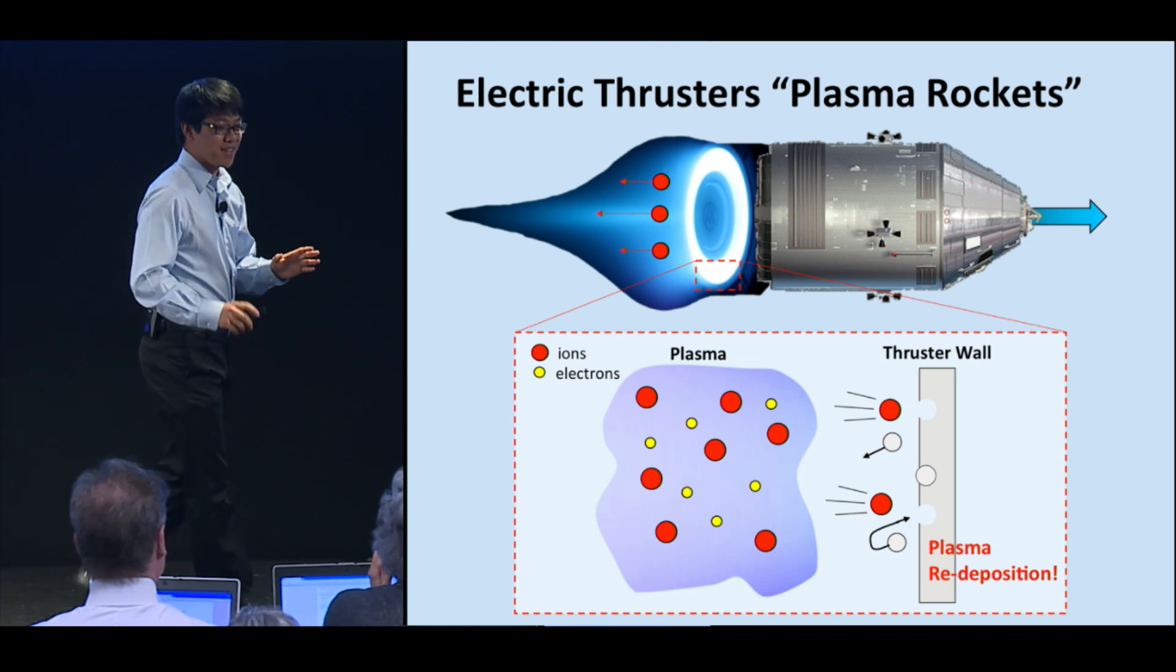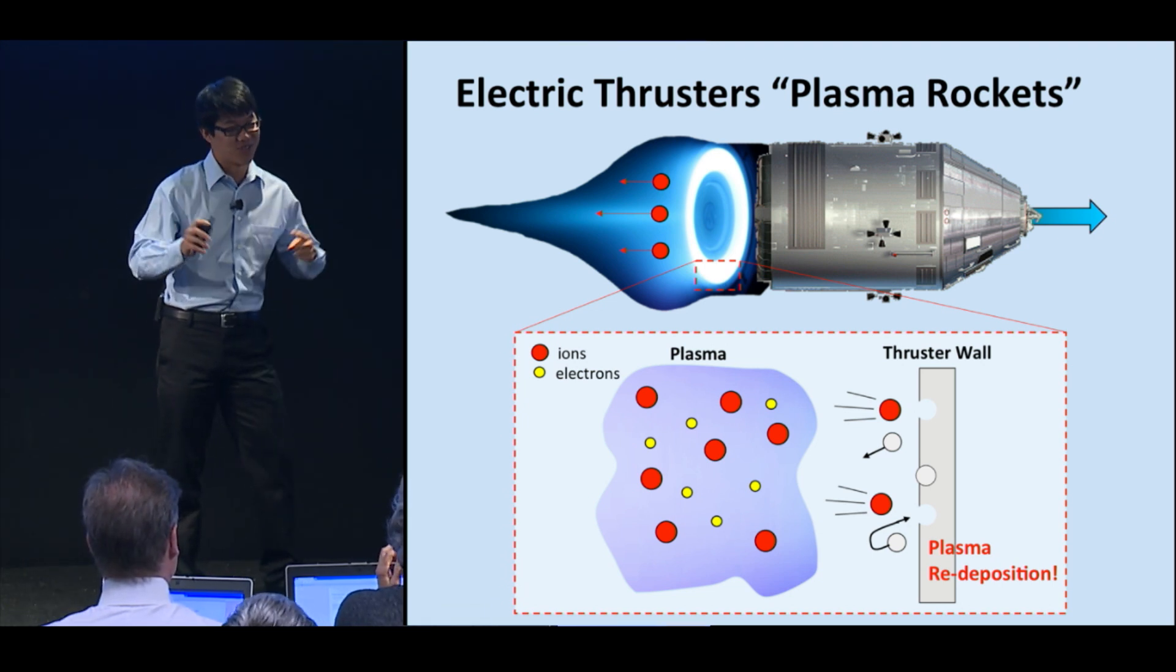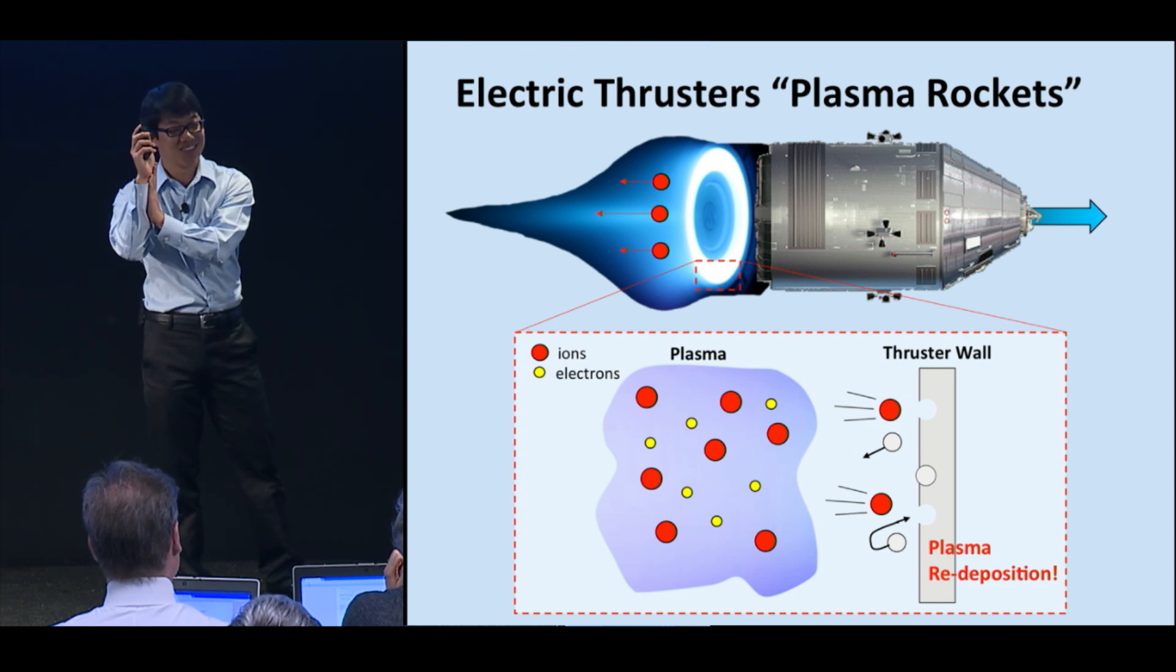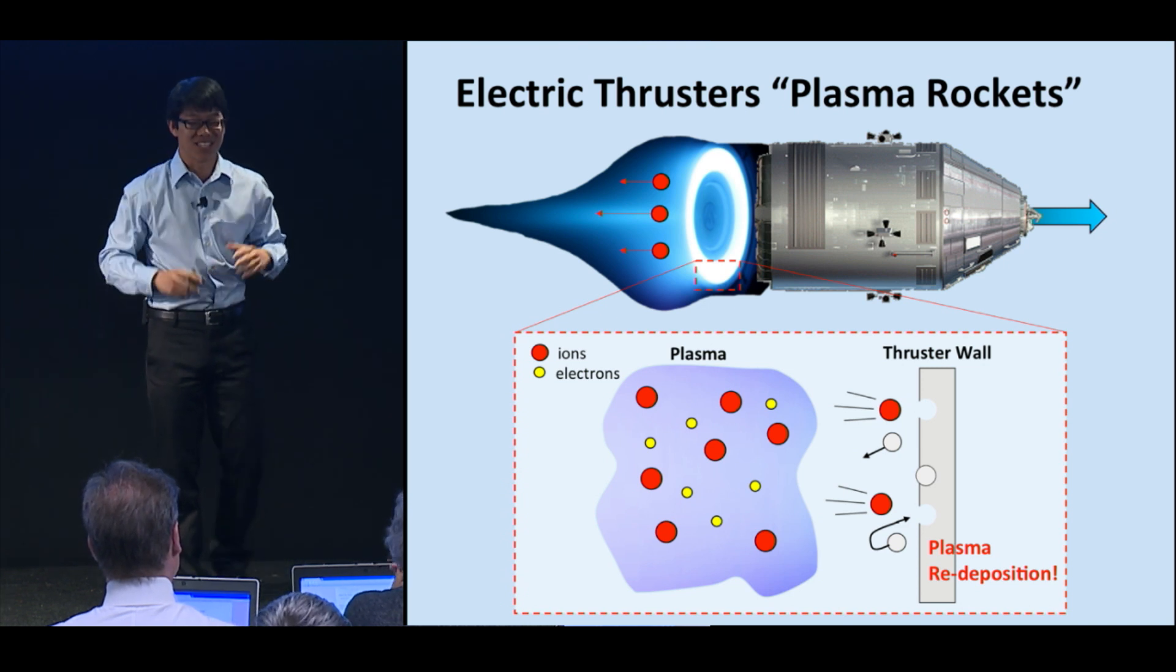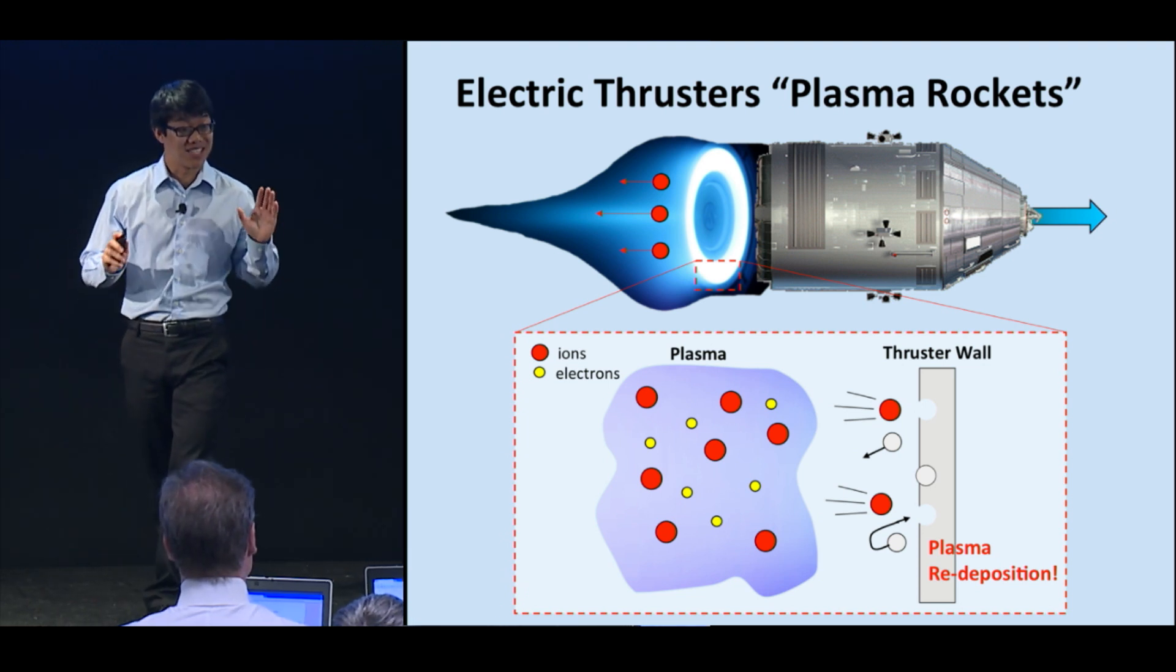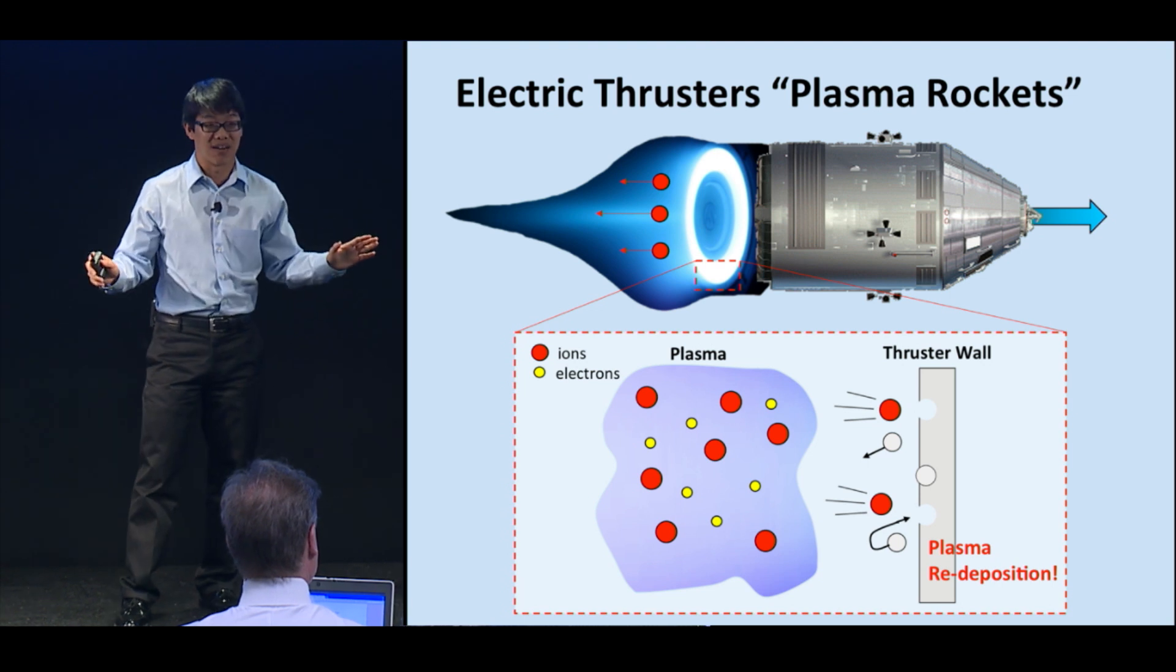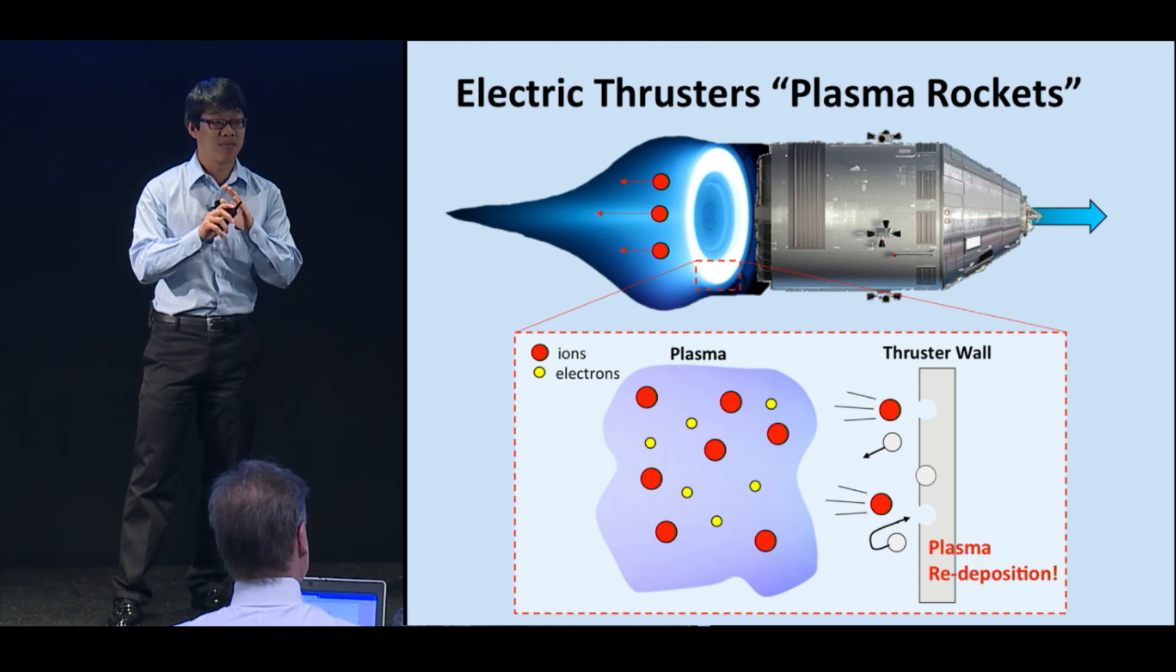But what if there was an effect where the pieces that break off turn around and go back to the wall, repairing itself? Could something like this actually happen? Turns out, yes, this effect called plasma redeposition can magically repair the walls of your thruster, making it unbreakable.